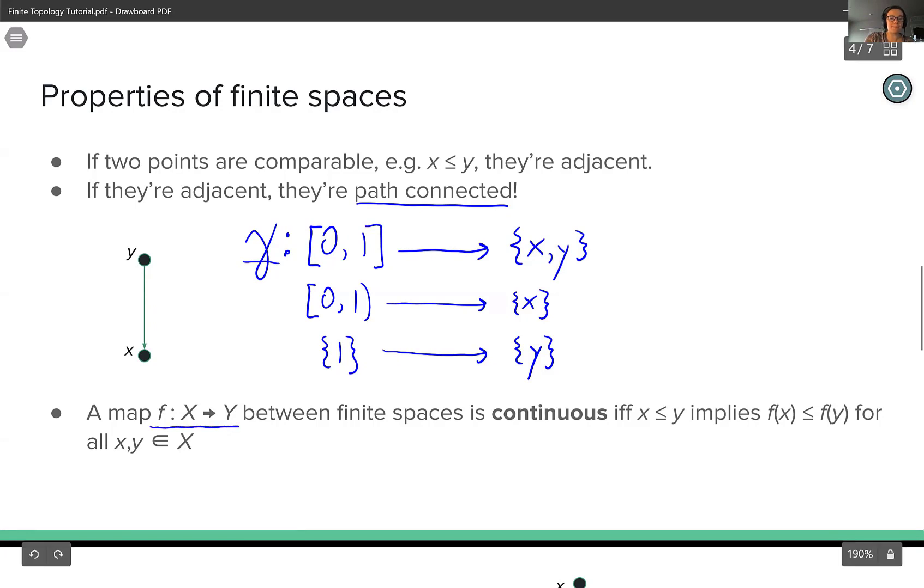Lastly, a map f from x to y between finite spaces is continuous if whenever two points are comparable in x, their images are comparable the same way under f in y for all x and y in our starting space x.